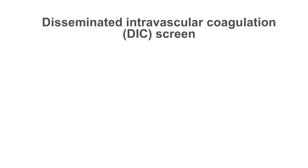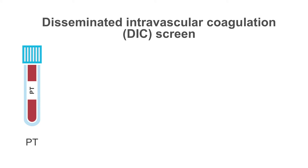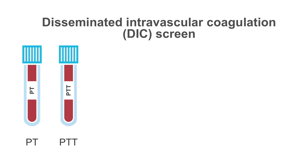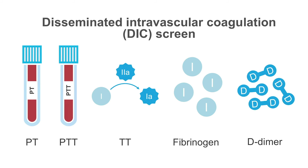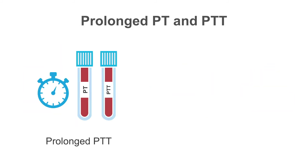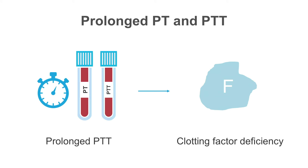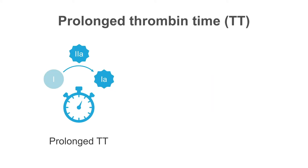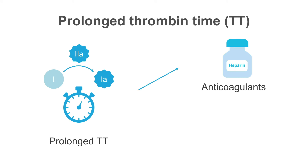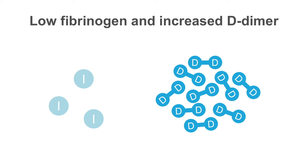Another test we can employ for detection of coagulopathy in bleeding patients is a DIC screen. This screen includes five tests: PT, PTT, thrombin time, fibrinogen level, and D-dimer levels. If the PT or PTT are prolonged, it indicates deficiency in one or more clotting factors. If the thrombin time is prolonged, this usually means presence of anticoagulants such as heparin, or low levels of fibrinogen. If the fibrinogen level is low with increased levels of D-dimer, this usually implies fibrinolysis.